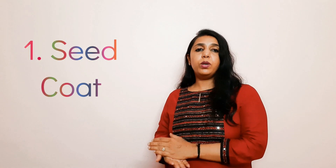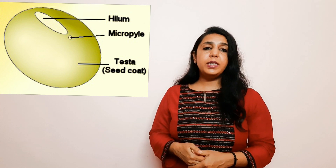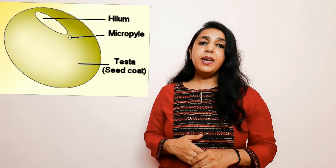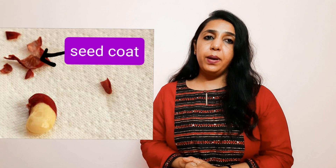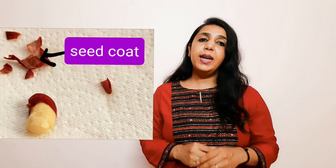Every seed has three parts. The first is the seed coat. The seed coat is the outer covering of a seed. Its function is to provide protection to the seed. Many times seeds are mishandled and not handled properly, so it is the seed coat which protects the seed from getting damaged.